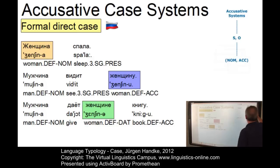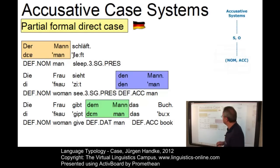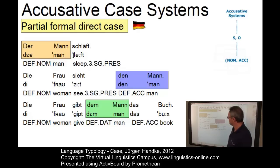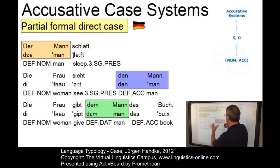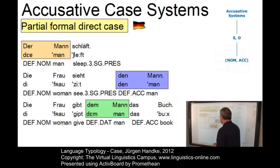The next variant is a language with partial formal direct case distinction — German. Der Mann schläft, die Frau sieht den Mann, die Frau gibt dem Mann das Buch — the man is sleeping, the woman sees the man, the woman gives the man the book. Looking at the noun itself, Mann, there is no distinction at all. But case is expressed by the determiner: der is nominative, den is accusative, and dem is the dative case.